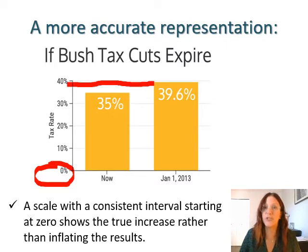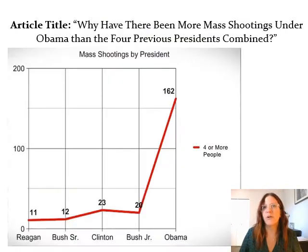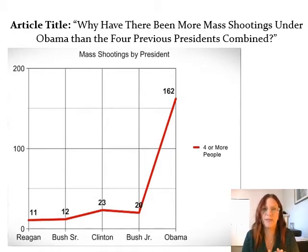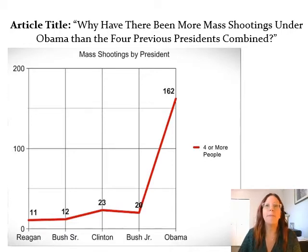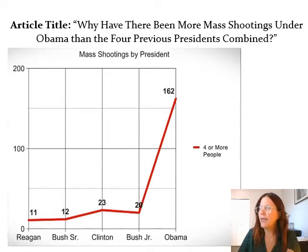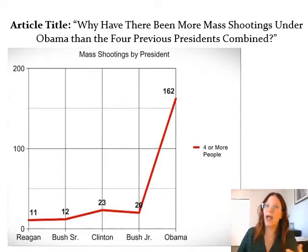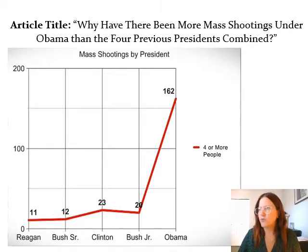I want you to be able to look at information in the media and ask, does this seem like it's being presented to persuade me? If information seems like it's trying to be persuasive, it probably is biased. Another example — this was in an article some time ago — is a perfect representation of when we should question information. The article title was: 'Why have there been more mass shootings under Obama than the four previous presidents combined?' And they give us this graph, basically telling us there have been more mass shootings under Obama.